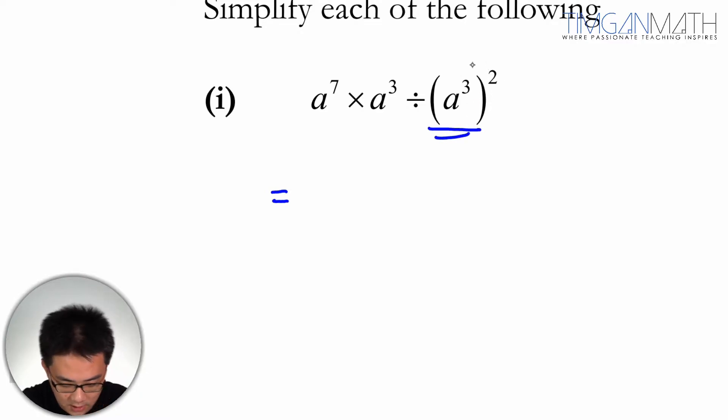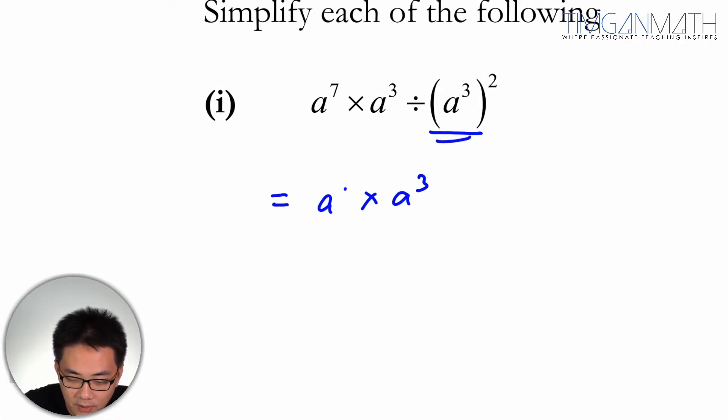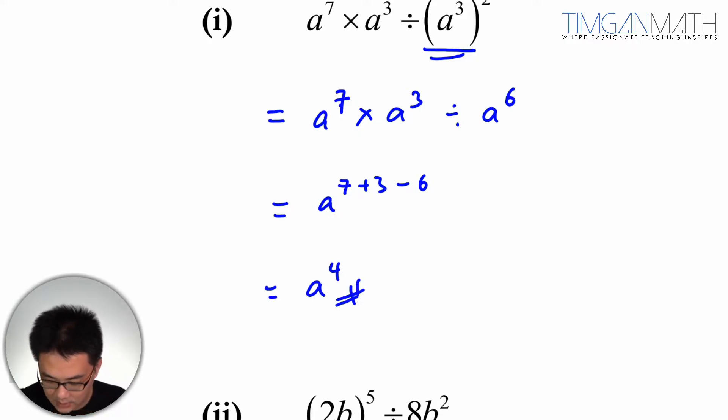I'm going to use law 5 I believe. I don't really remember the laws. So this would be a to the power 7 times a to the power 3 divided by a to the power 6 times 2 which is 6. So this would be a to the power 7 plus 3 minus 6, and this would be a to the power 4.